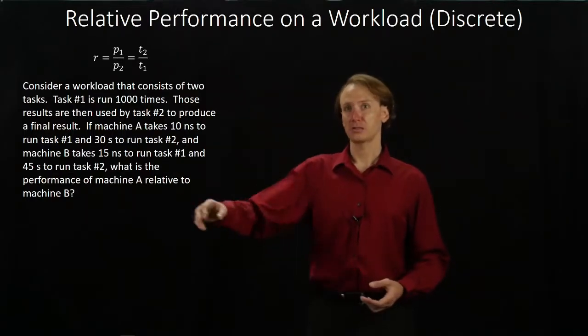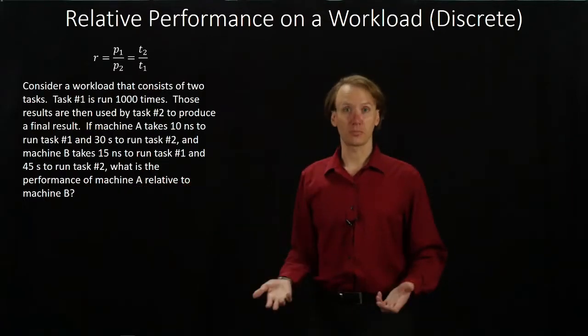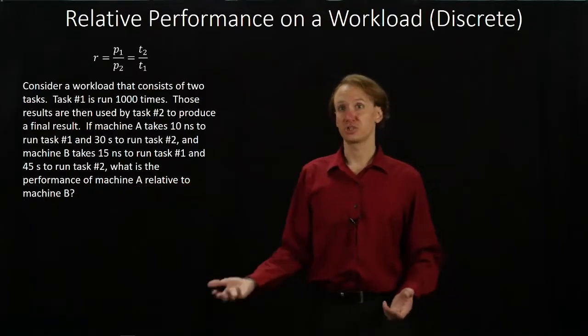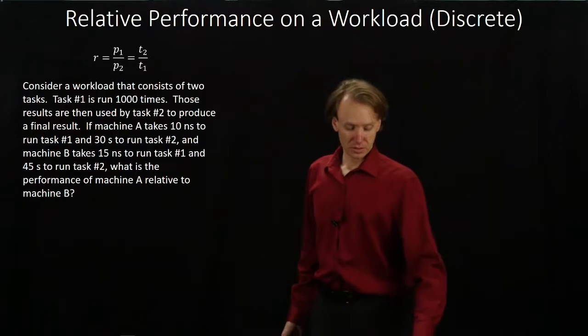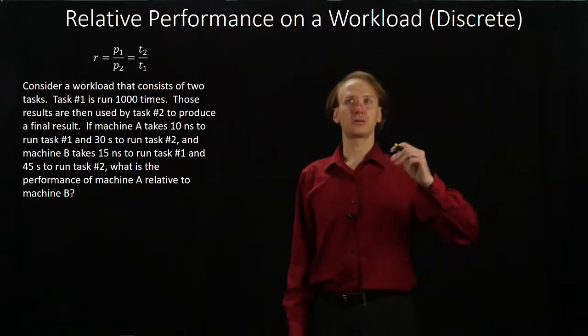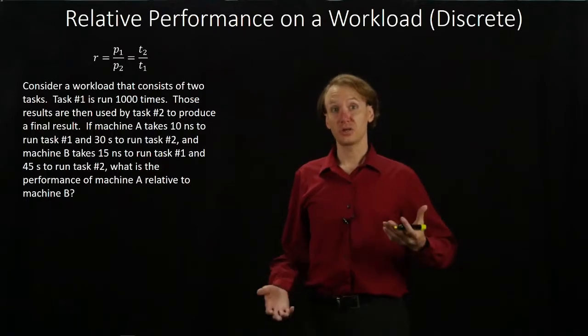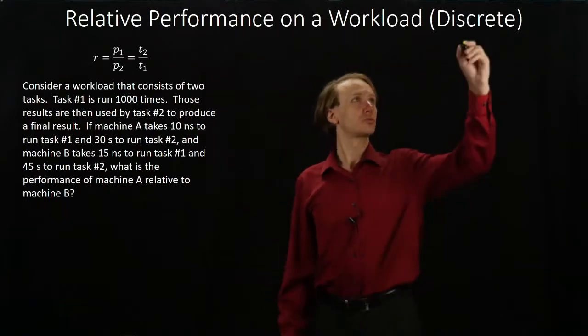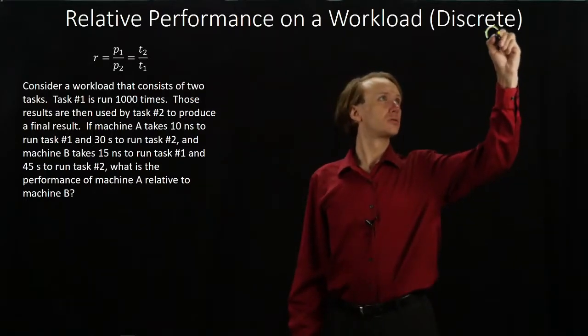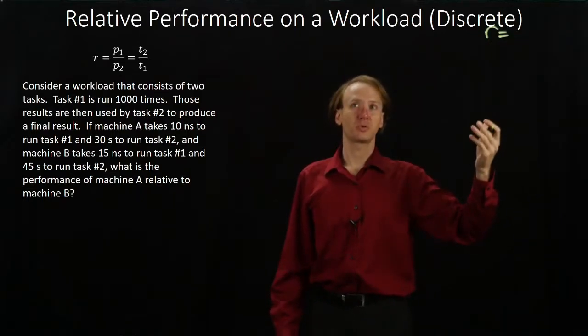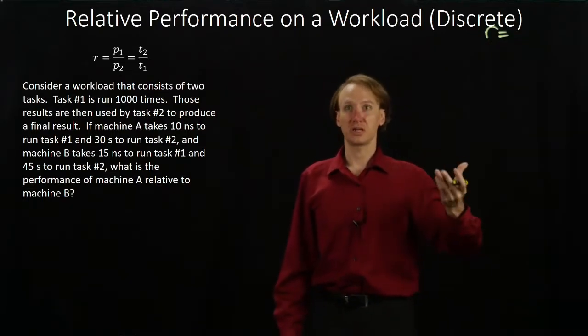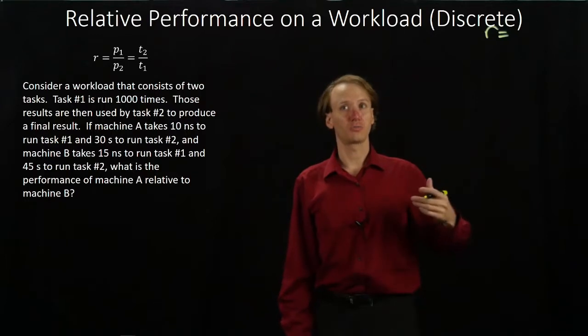So the problem asks you to calculate the relative performance of machine A to machine B. In the end, we're going to be looking to satisfy this equation, and we'll have two times. We're looking for a relative performance ratio of, in this case, machine B over machine A.